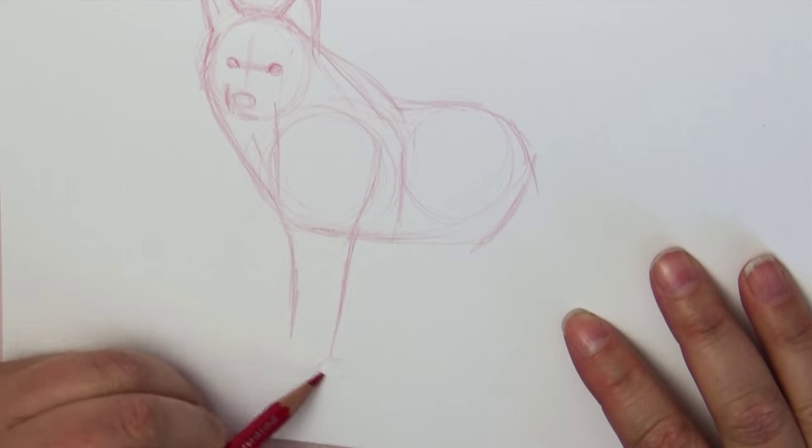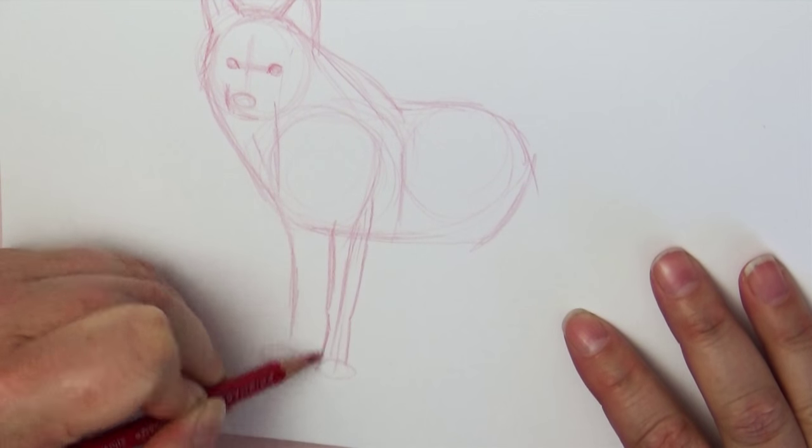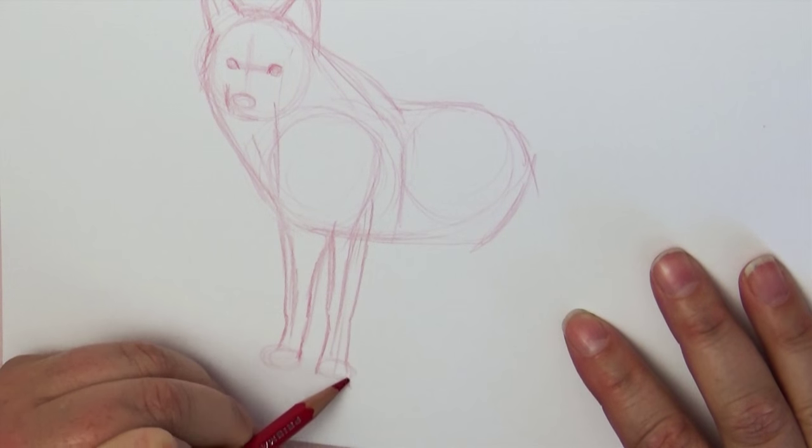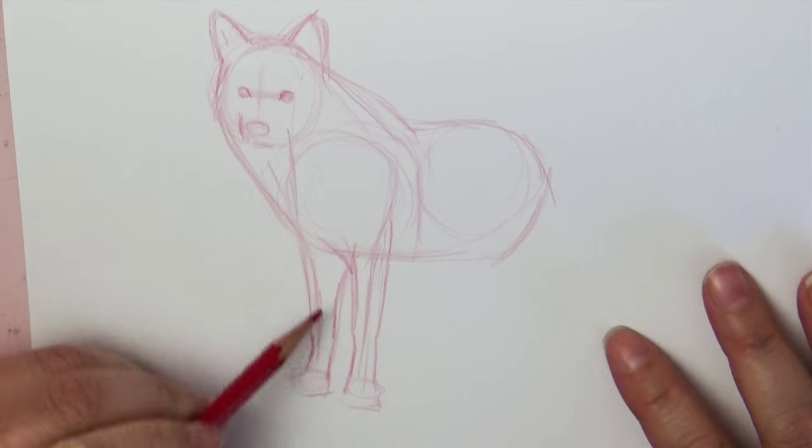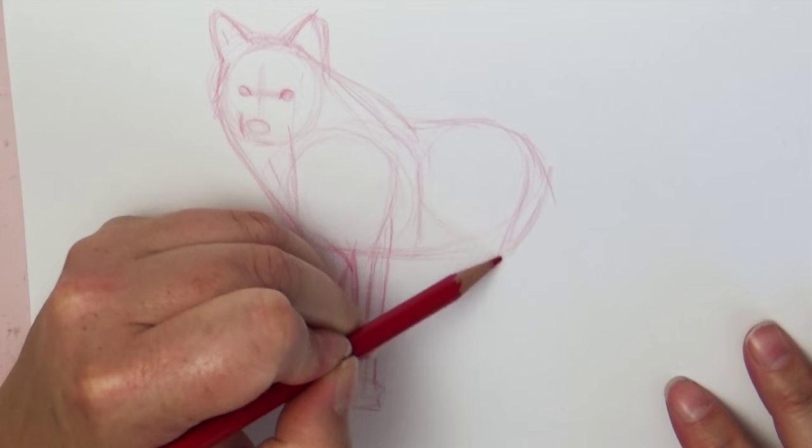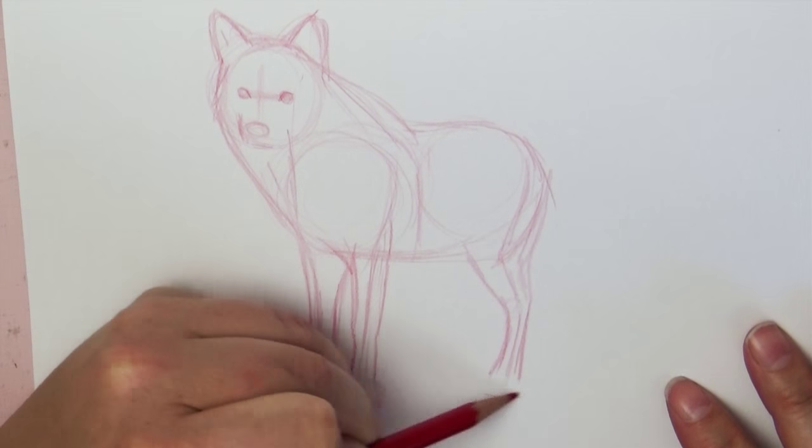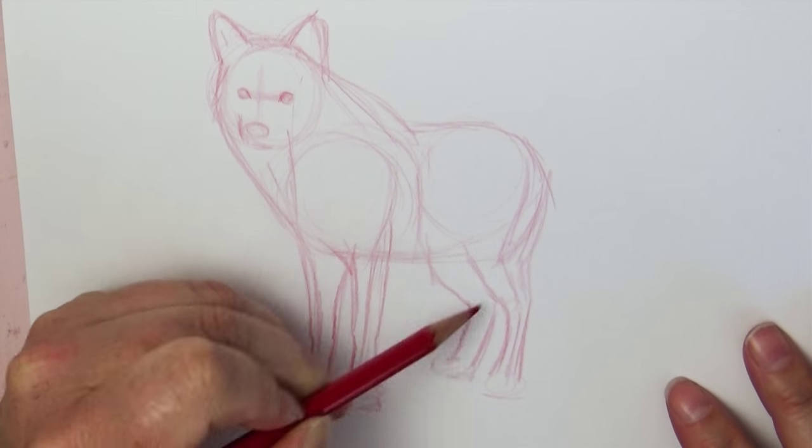I have a ton of videos on drawing wolves and dogs, and I actually have a video on drawing bird's wings, so I'm not going to go into super duper detail on how the construction and muscles and all that of the bird's wing go because you can watch both those videos. I'll put links to those in the description box below, but I want to talk about combining the two together.